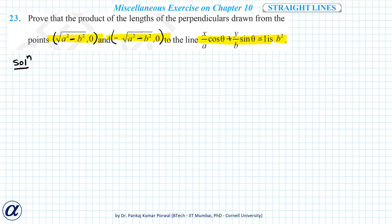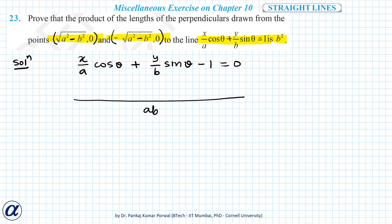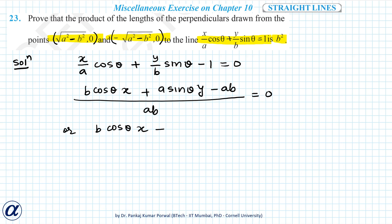To solve this question, first I will simplify the equation of the line: x/a·cosθ + y/b·sinθ = 1. Bringing the 1 to the left side gives minus 1 equals zero. Taking LCM as ab, this gives b·cosθ·x + a·sinθ·y − ab = 0.